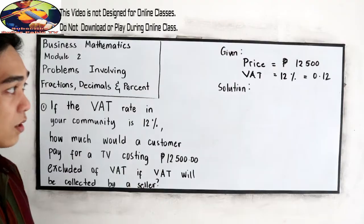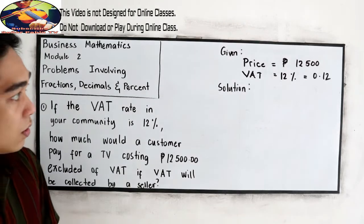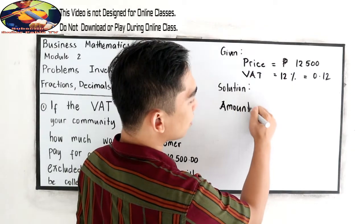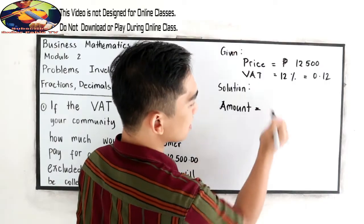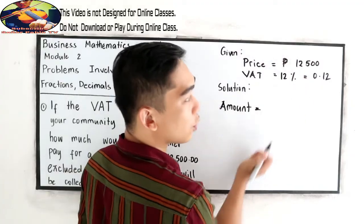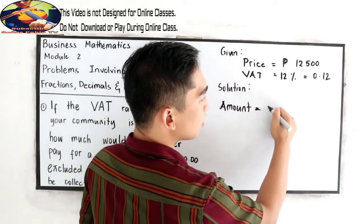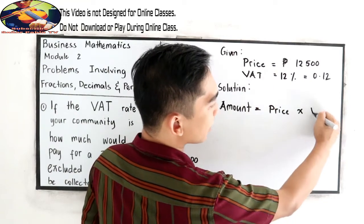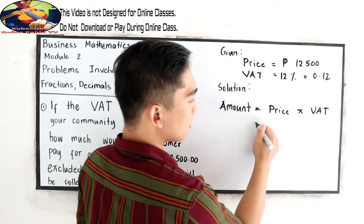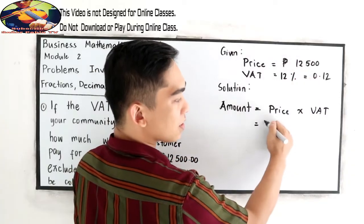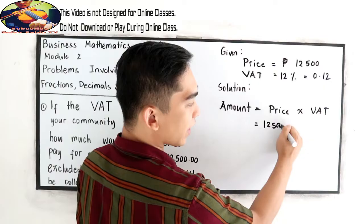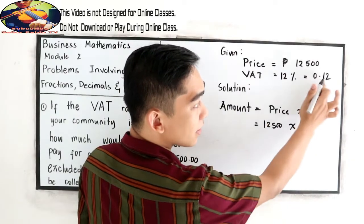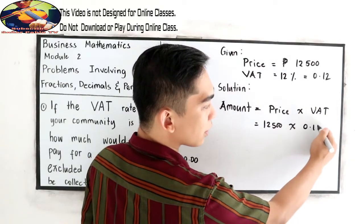Now, let's have our solution. To find the actual amount or actual price, we compute price times the VAT. Our price is 12,500. We're going to multiply it by 12% in decimal, which is 0.12.